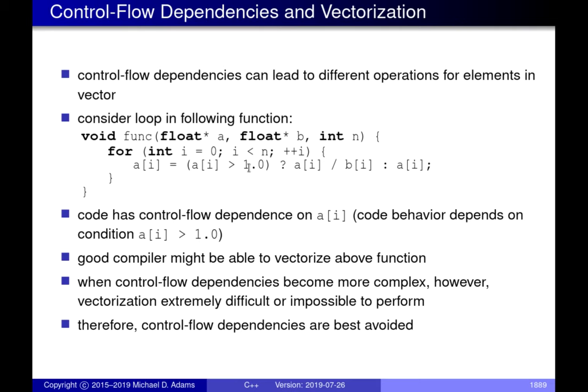If you imagine unrolling this loop and then vectorizing it, the problem you run into is that different iterations don't have the same structure — some might be doing one computation and some might be doing another. Most CPU vector instructions want to do all the same things to all elements in the vector being processed. By having control flow dependencies like this, we're effectively saying we'd like different things to happen to different elements in the vector.